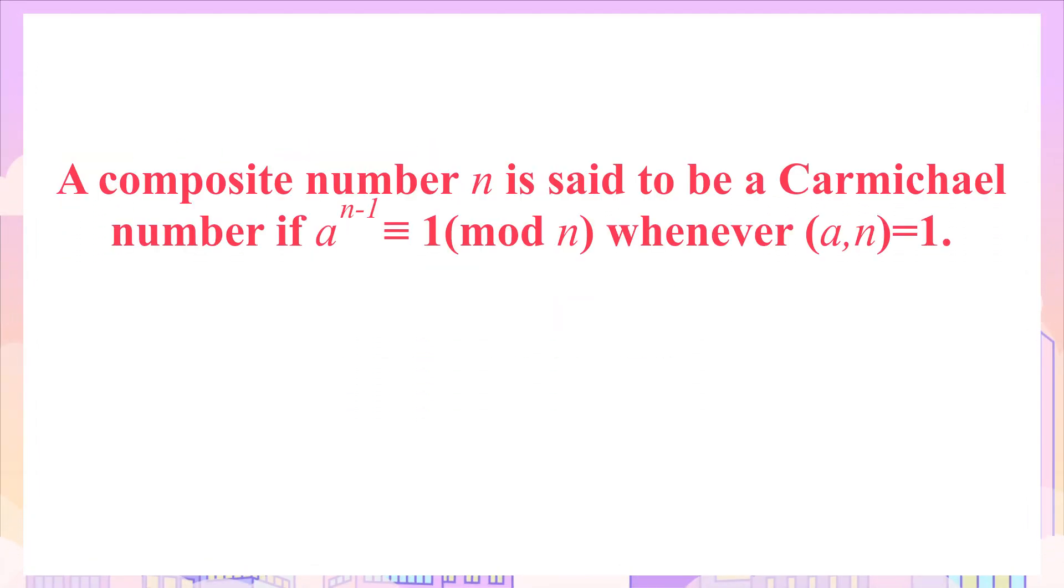An integer n greater than 1 is a Carmichael number if n is a composite number and for an integer a, a to the power n minus 1 is congruent to 1 modulo n, whenever a and n are relatively prime.